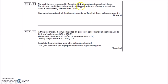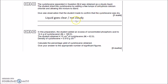The cyclohexene was obtained as a cloudy liquid. The student dried it by adding a few lumps of anhydrous calcium chloride — a good compound for removing water. It's cloudy because the cyclohexene still has little water droplets in it. Give one observation to confirm the cyclohexene was dry: it will lose its cloudiness and go clear — no longer cloudy.